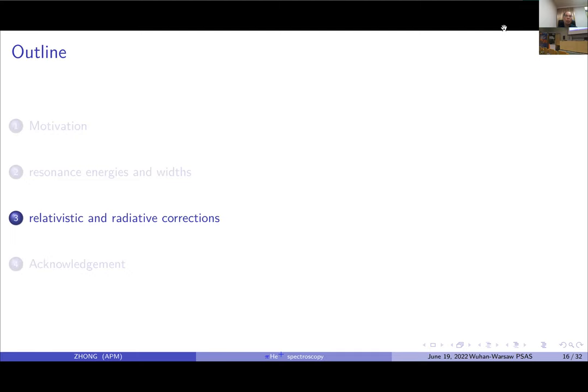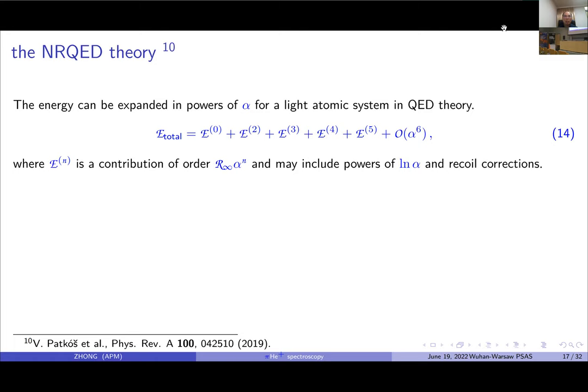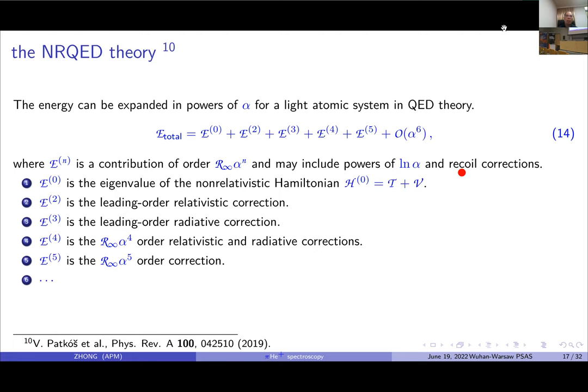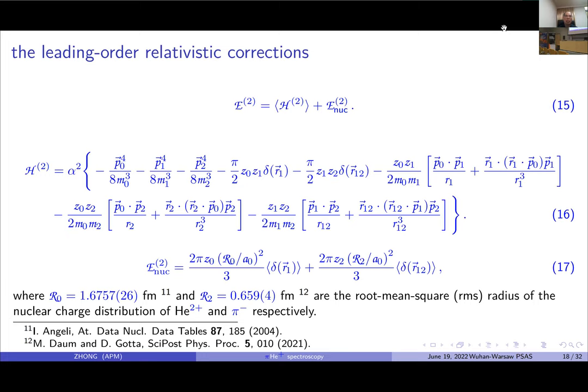Next we should calculate relativistic and radiative corrections. According to QED theory, the energy can be expanded in powers of alpha for a light atomic system in QED theory, as this expression. Here, E^(n) is a contribution of order alpha^n and may include powers of ln(alpha) and recoil corrections. The first one is the eigenvalue of non-relativistic Hamiltonian, and the next order is the leading order relativistic correction and nuclear size effects.